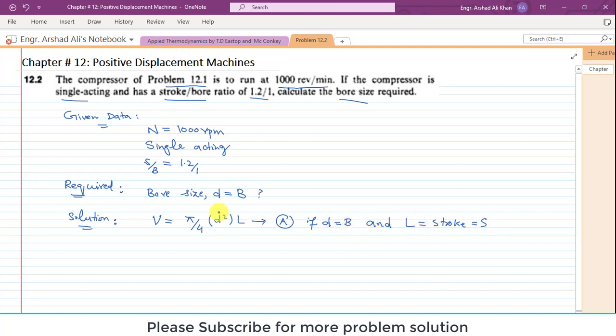Putting capital B and capital S in expression A, expression A will become V is equal to pi by 4 into B squared into S. Further, we have S by B is equal to 1.2, so S is equal to 1.2 B.